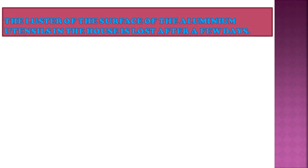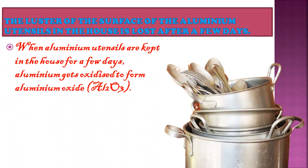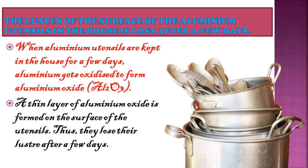The lustre (shining) of the surface of aluminium utensils in a household is lost after a few days. When aluminium utensils are kept exposed to air, the aluminium gets oxidized to form aluminium oxide (Al₂O₃). A thin layer of Al₂O₃ forms on the surface of the utensil through reaction with oxygen in the air — this is also an example of corrosion. Thus aluminium utensils lose their metallic lustre after a few days.